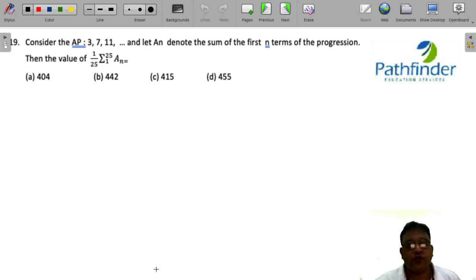Plot to quantitative aptitude question 119. Consider the arithmetic progression 3, 7, 11 and so on, and let a_n denote the sum of the first n terms of the progression. Then the value of 1/25 summation of 1 to 25 a_n is.